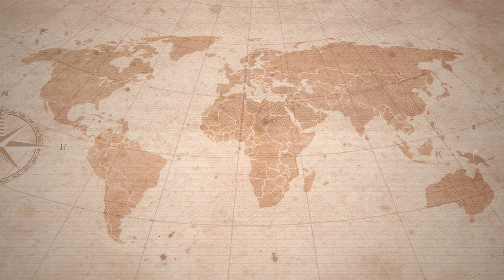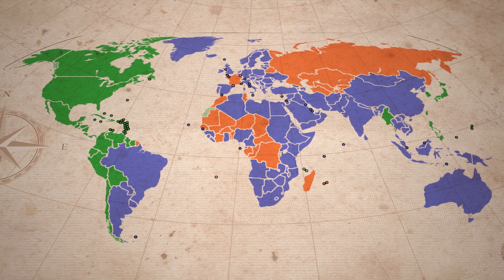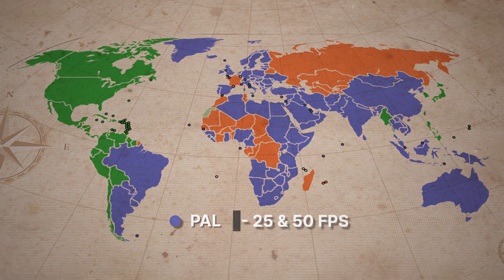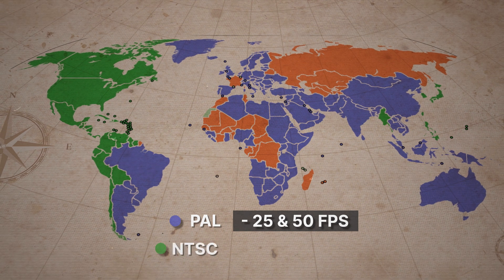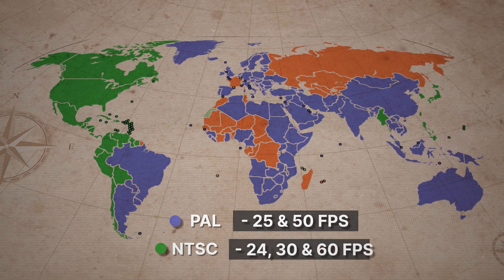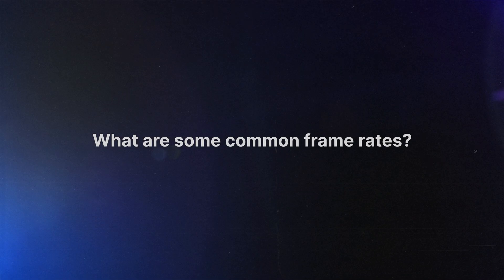Depending on which part of the world you live in will depend on the standard of frame rates you use. The two most common standards are PAL, which shoots at 25 and 50 frames per second, and NTSC, which shoots at 24, 30, and 60 frames per second — with 24 and 30 rounded up from 23.976 and 29.97 for legacy reasons. For the rest of this video I'll be talking in NTSC terms, so PAL users just substitute 24 for 25 and 60 for 50.